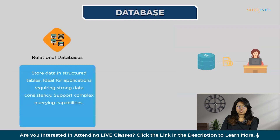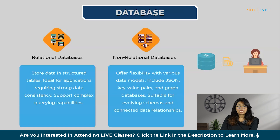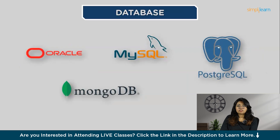There are two types of databases. Relational databases store data in structured tables with fixed rows and columns, making them ideal for applications requiring strong data consistency and complex querying. Non-relational databases, often referred to as NoSQL databases, offer more flexibility by accommodating various data models — including JSON for semi-structured data, key-value pairs for simple retrieval, tables with dynamic columns for evolving schemas, and graph databases using nodes and edges for connected data relationships. Examples include Oracle, MySQL, PostgreSQL, and MongoDB.